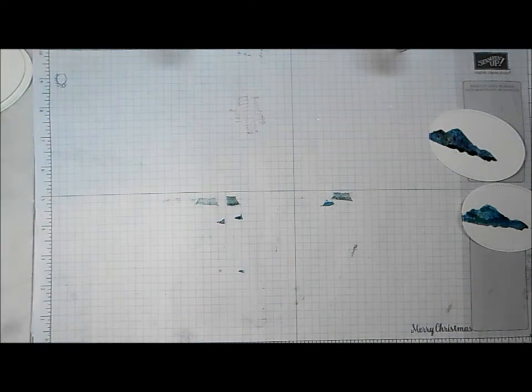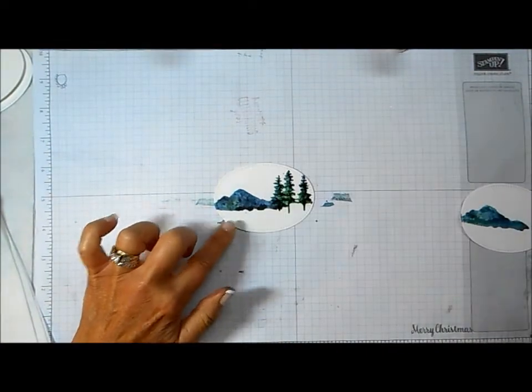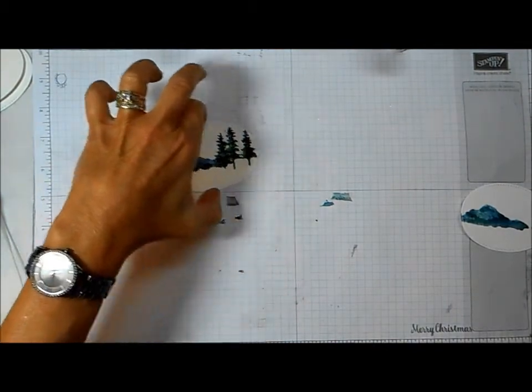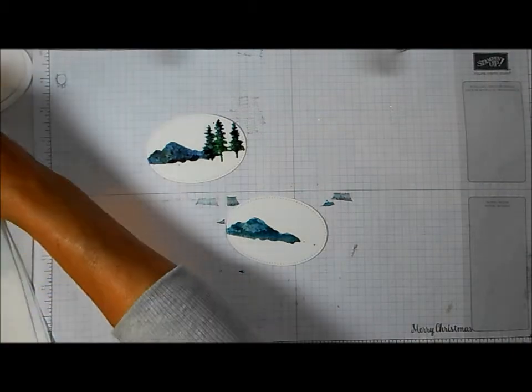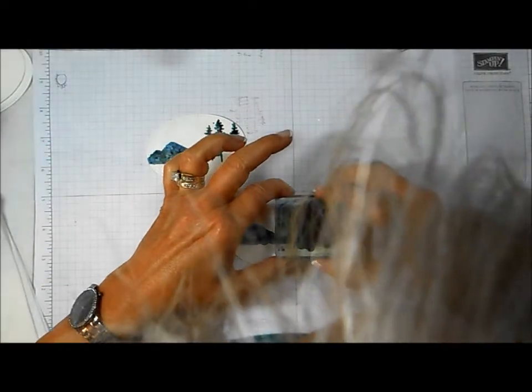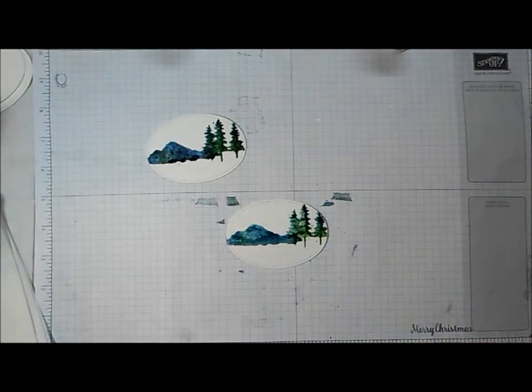I'm going to set that, pull that aside, get my image ready or my paper ready. Spritz my stamp. There's definitely enough there to go around for another try. You can actually try to get more than two if you want to. So there's two of them.